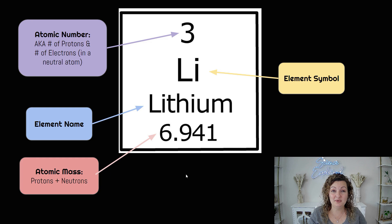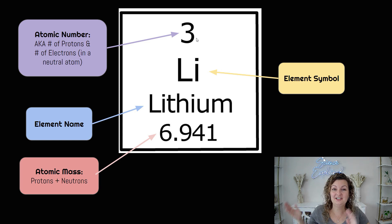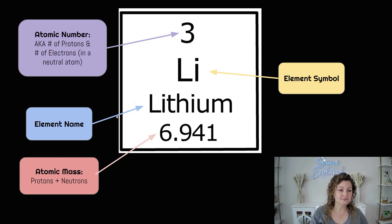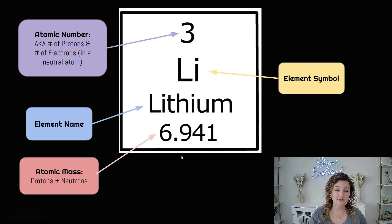So now here's a big breakdown of everything else that's going on in the periodic table square. We've already talked about the atomic number, which is the number of protons. We've already talked about the element symbol — it's going to be a capital letter, and then a lowercase letter if there's a second one. And then of course the atom name or element name. And then the bottom is going to be our atomic mass, which is protons plus neutrons.